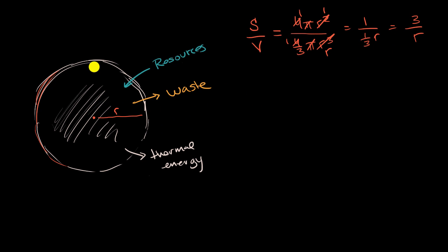And so we see, at least for a spherical cell like this, as r increases, as our cell gets larger and larger, the ratio between our surface area to volume decreases.